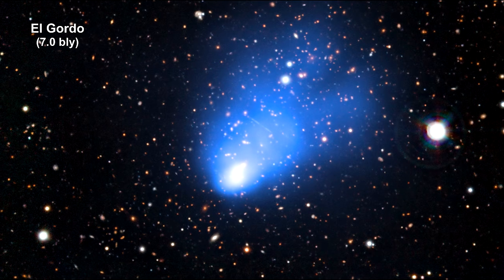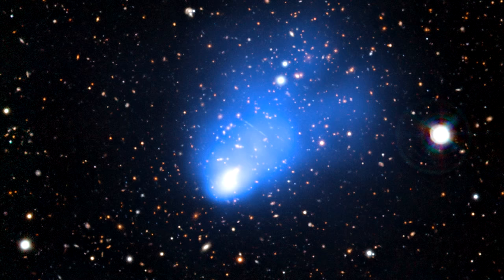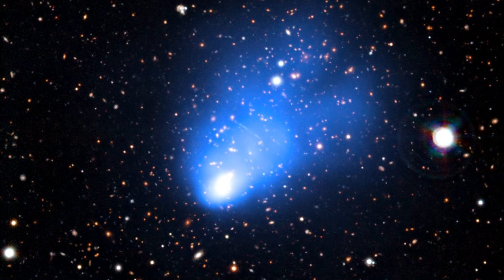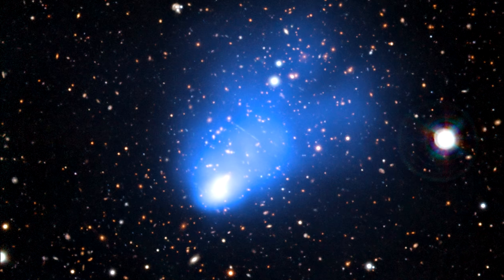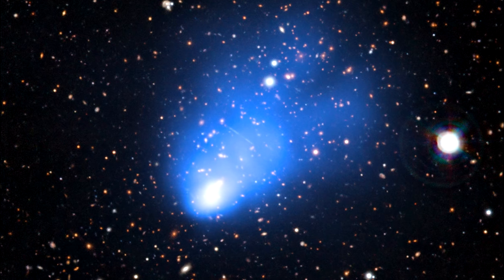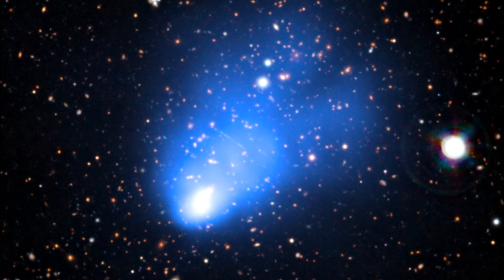This is a combined ESO Very Large Telescope and Chandra image of the newly discovered galaxy cluster called El Gordo. It consists of two separate galaxy sub-clusters colliding. We are seeing what this cluster looked like when the universe was only half its current age.